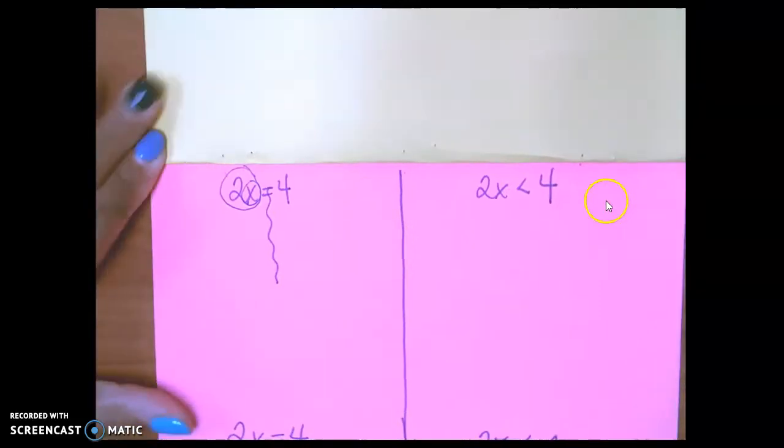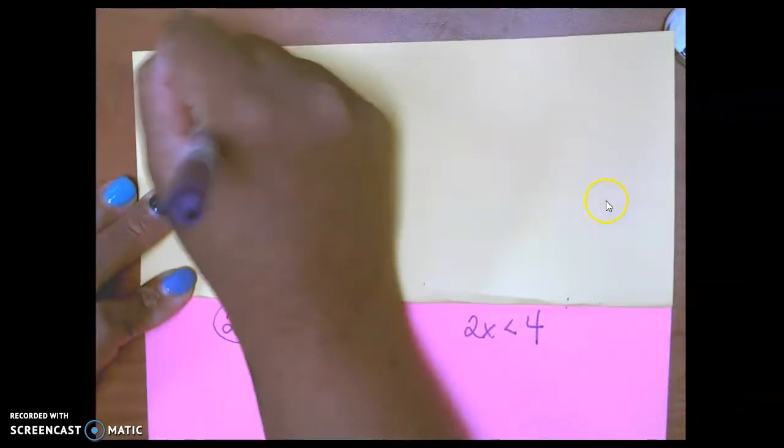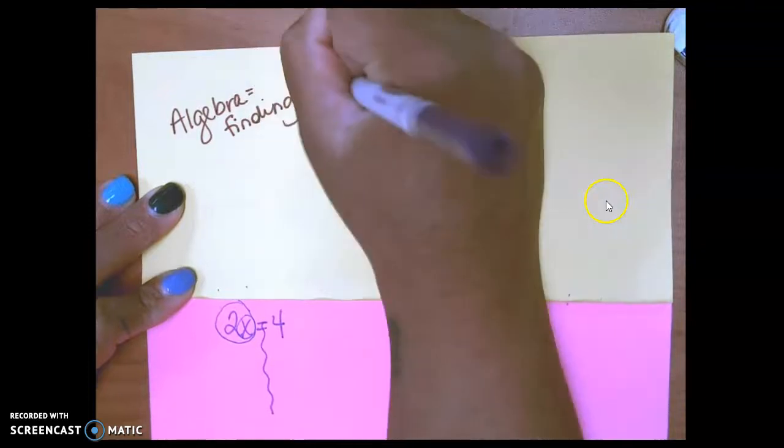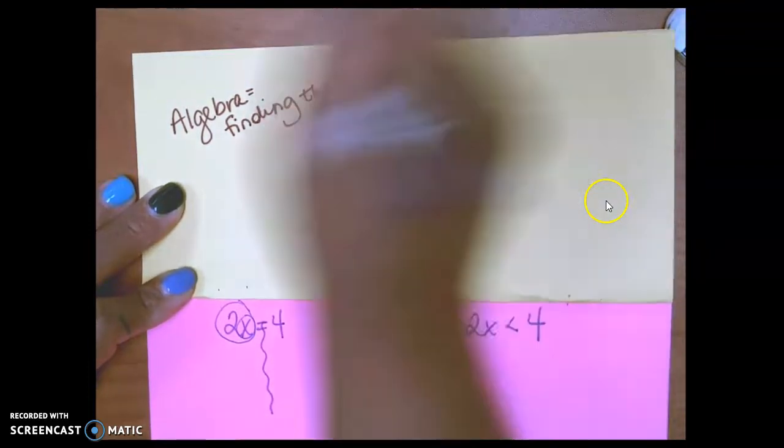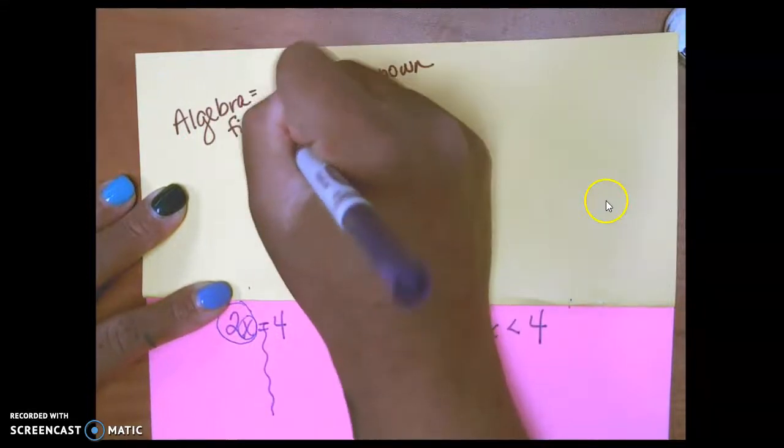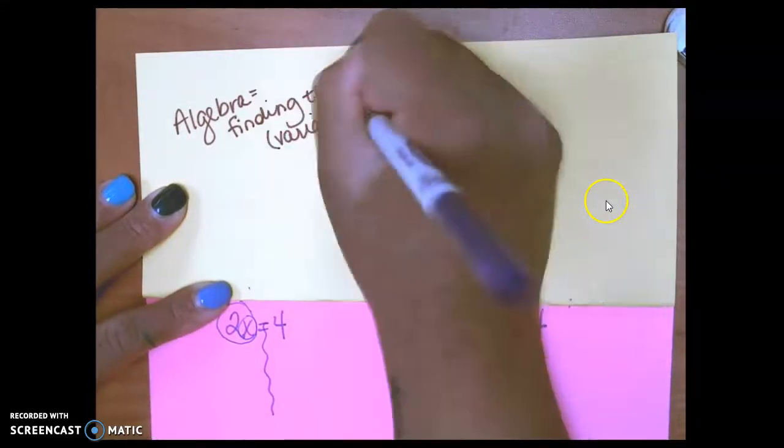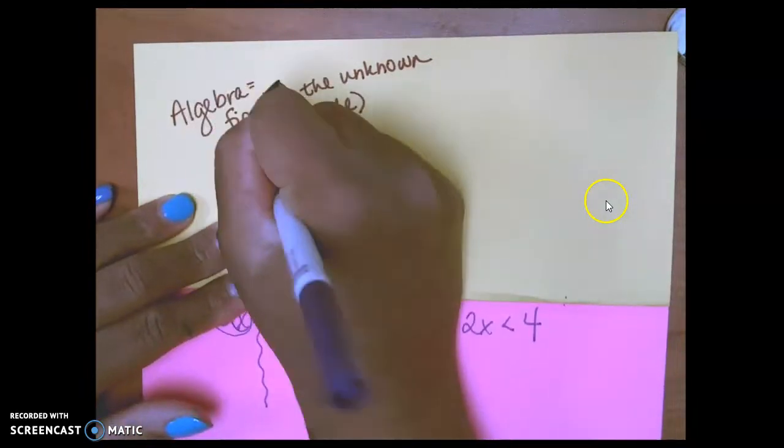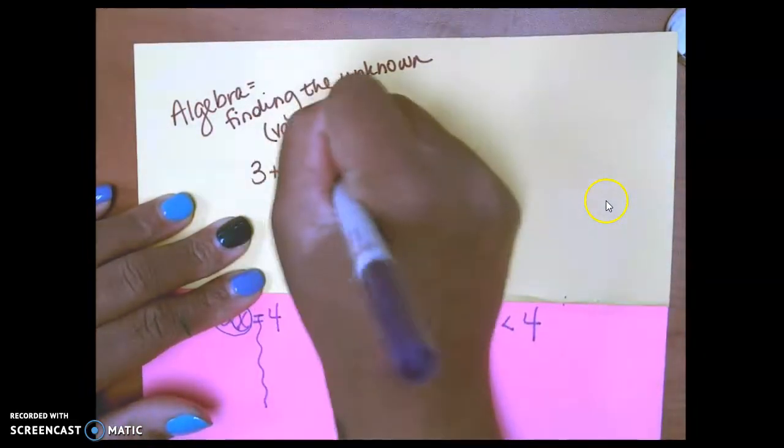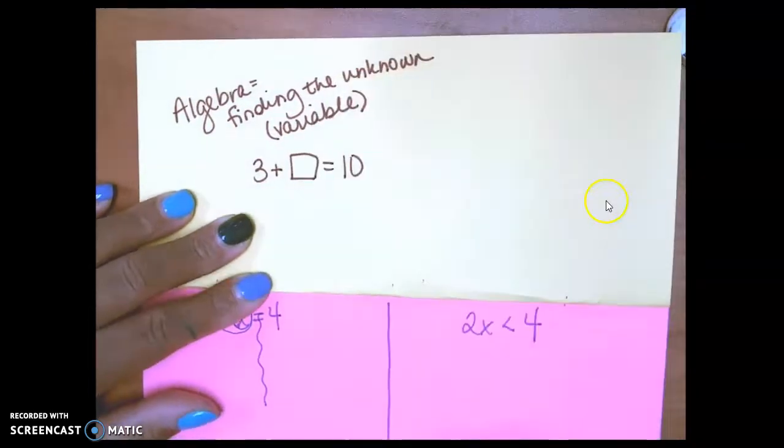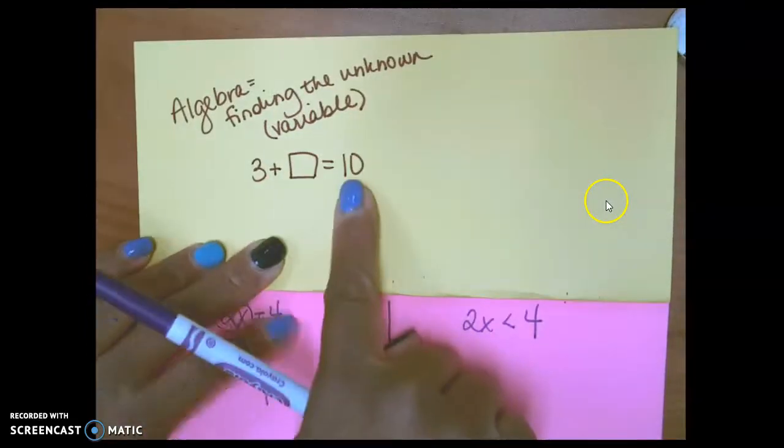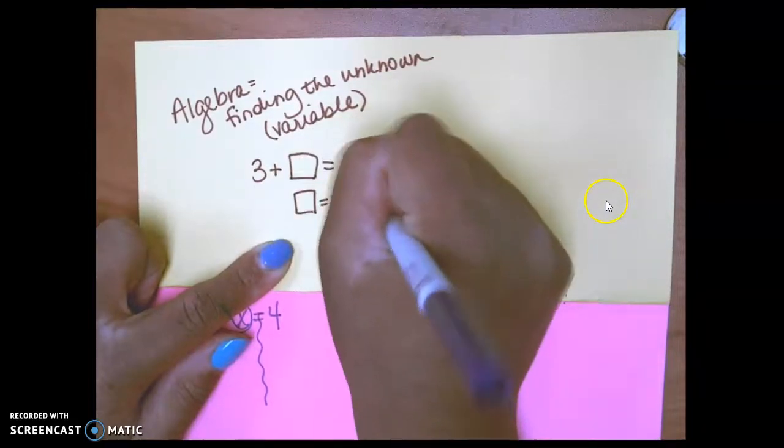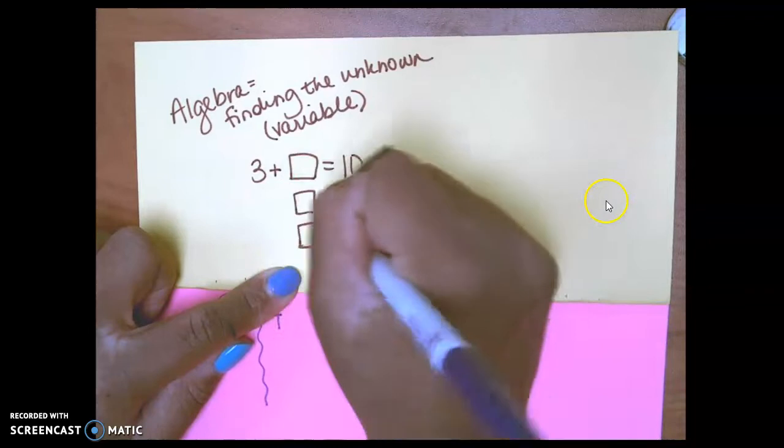Now, remember, I told some of you in class that algebra is finding the unknown. Most of the time, it involves a variable. Now, there's other kind of algebra or other things involved in algebra, but mostly it's finding the unknown. So in elementary school, we used a box for algebra, 3 plus some number gives us 10. In order to find that box, what do we have to do with the 10 and the 3? Box equals 10 minus 3. Box equals 7.